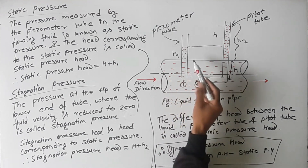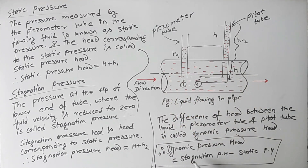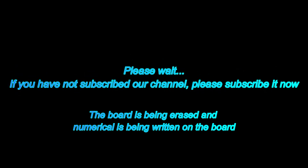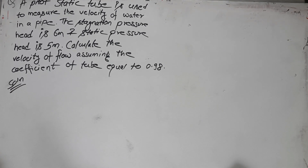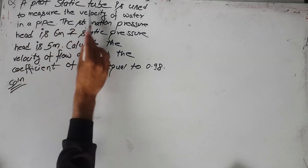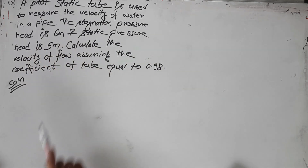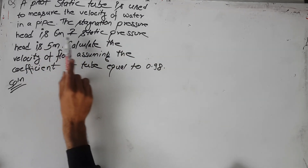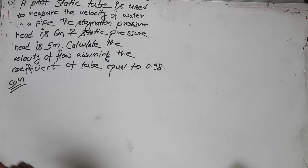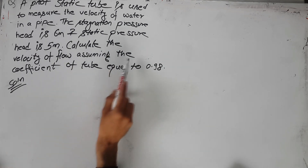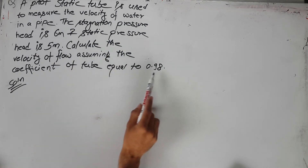Now we will do a numerical of the pitot tube relating to stagnation pressure head, static pressure head, and dynamic pressure head. A pitot-static tube is used to measure the velocity of water in a pipe. The stagnation pressure head is 6 meters and the static pressure head is 5 meters. Calculate the velocity of flow assuming the coefficient of the tube is equal to 0.98.